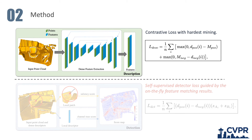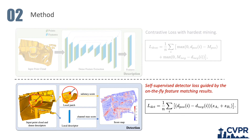We adopt contrastive loss with a hardest mining strategy for the description part. To optimize the detector network, we design a self-supervised detector loss by using the on-the-fly feature matching result to evaluate the discriminativeness of each correspondence.